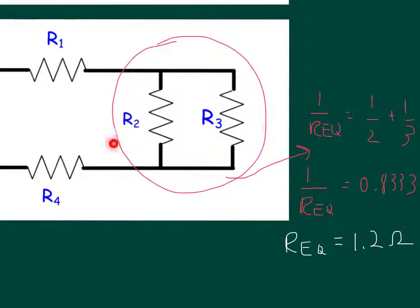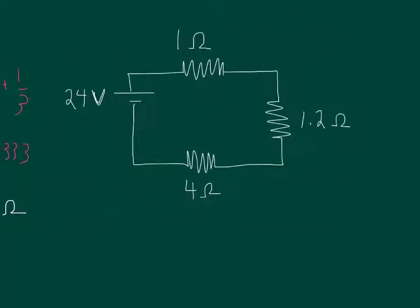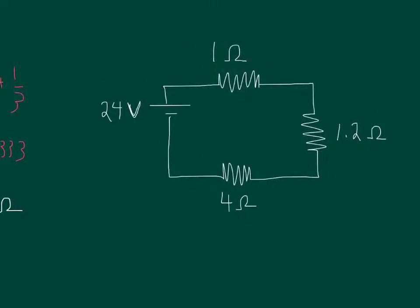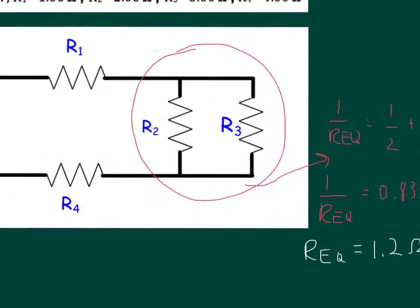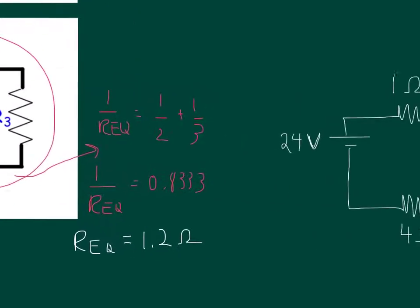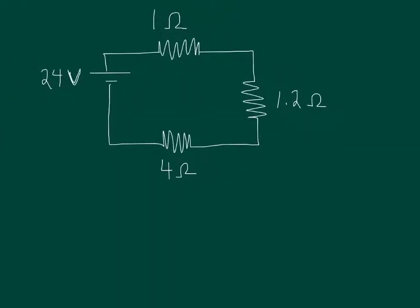What this really means is I could take a 1.2 ohm resistor and put it in here to replace those two. Now I'm going to resketch my circuit. Here's my source, 24 volts. Here was the first resistor, which was 1 ohm. Here is the new resistor, the equivalent, which is 1.2 ohms, and finally our 4 ohm resistor. We've taken a combination circuit with four resistors and we've now turned it into a very simple series circuit.